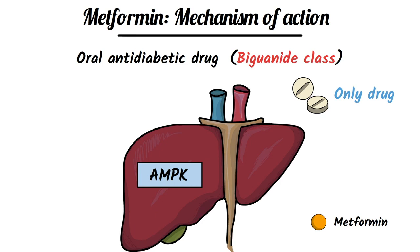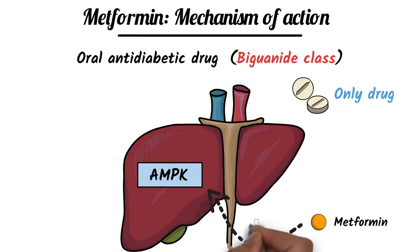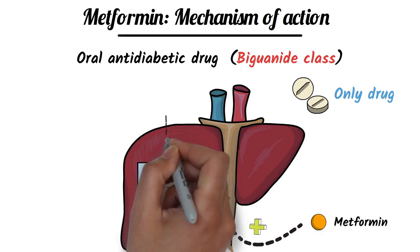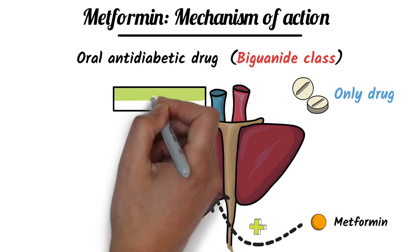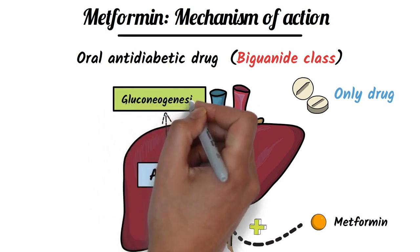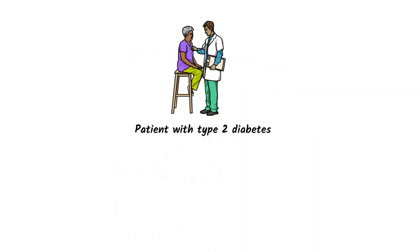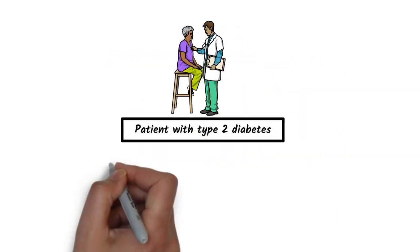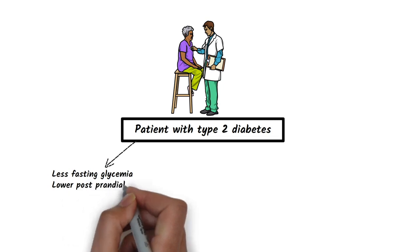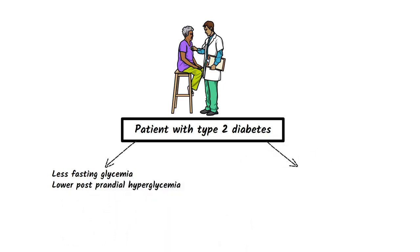Let's see how metformin decreases or maintains the blood glucose level. Metformin activates the AMPK enzyme in the liver, which inhibits gluconeogenesis. The inhibition of gluconeogenesis leads to decreased glucose production. Patients with type 2 diabetes have considerably less fasting glycemia as well as lower post-prandial hyperglycemia after administration of metformin.